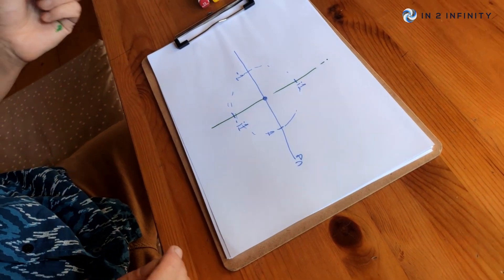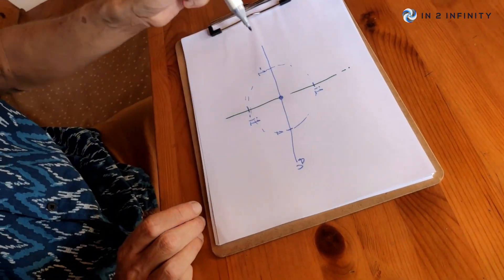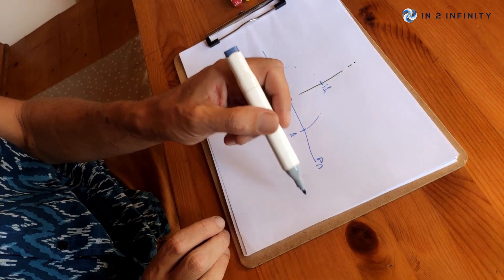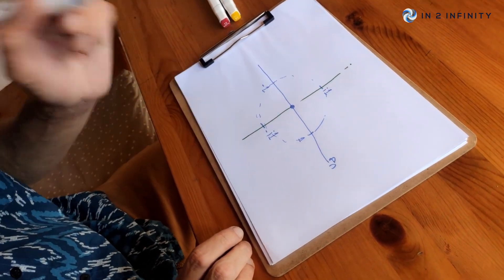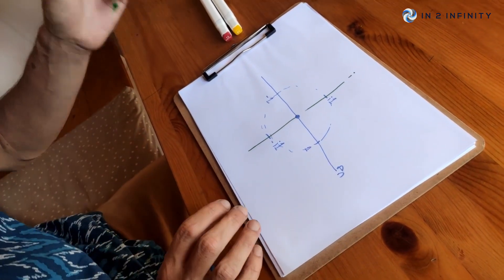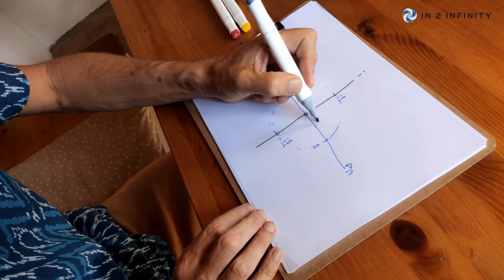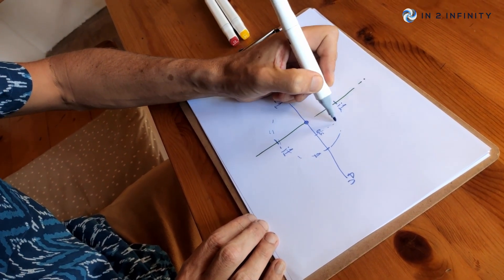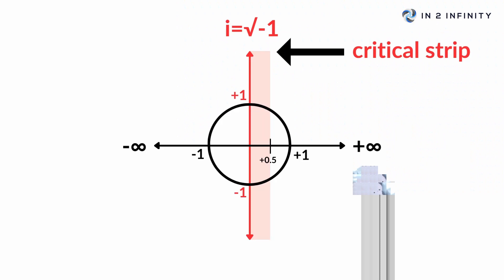This has been set up on a 90 degree axis with the i line going that way and the normal numbers, the regular numbers we all know, going across that way with the zero point in the middle. What seems to happen is there's this thing here, 0.5, which creates something called the critical strip.